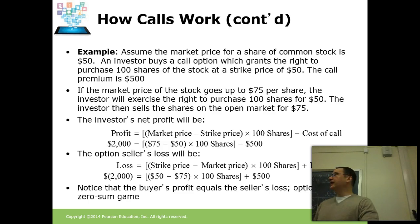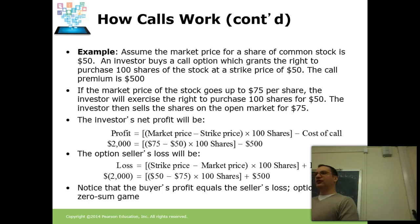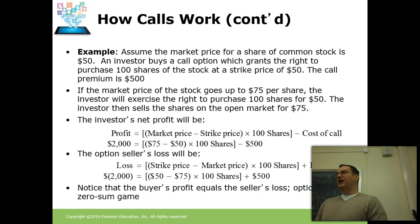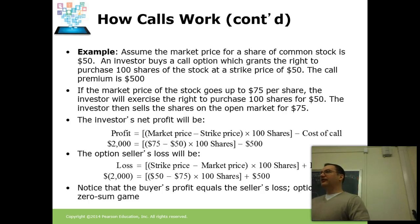One important thing is that options are a zero-sum game, which means whatever money I make as the writer of the contract, you lose. And any money you make as the purchaser of the contract, I the writer would lose. Nobody else makes money except the two people on the two sides of the contract. Exchanges make money through commissions and fees, sort of like eBay — eBay makes money, but the transaction profits are between the two parties.